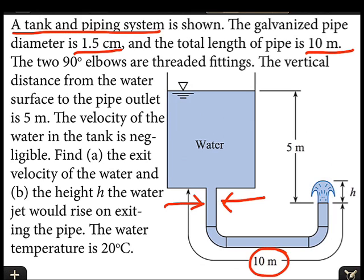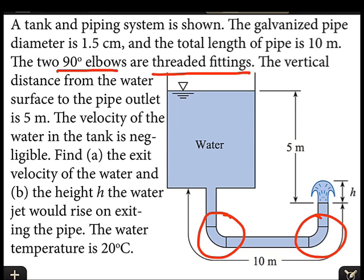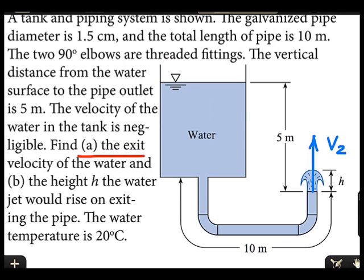There are two 90-degree elbows, both with threaded fittings. Those elbows are located right here and right here. The vertical distance from the water surface to the pipe exit is 5 meters. We're told to neglect the velocity of the water in the tank. Goal 1 is the exit velocity of the water, and Goal 2 is the height h of the water jet.